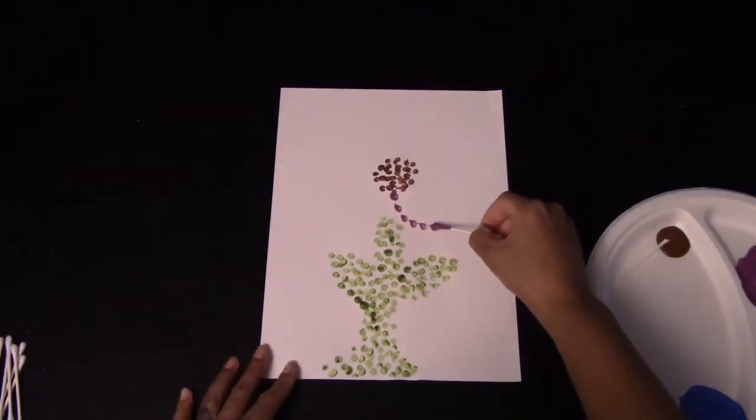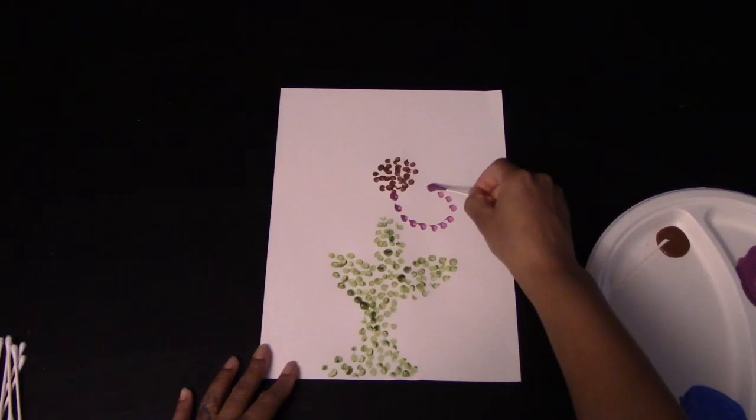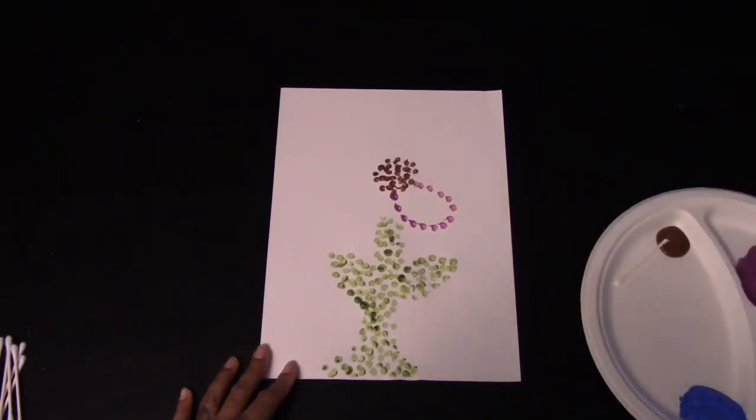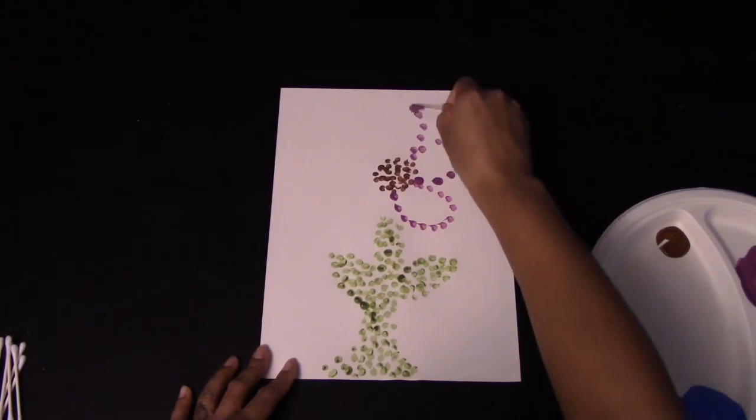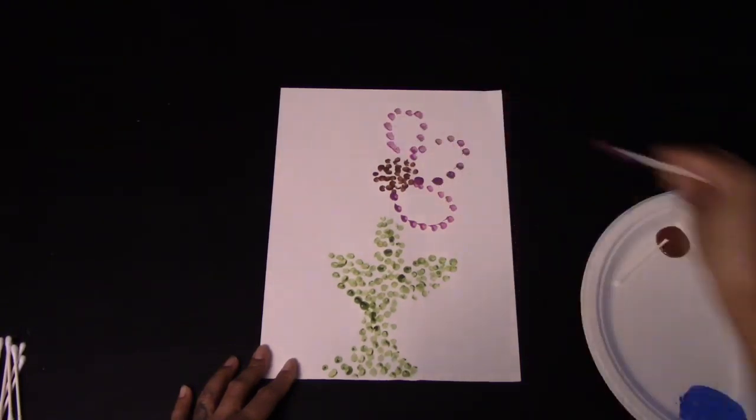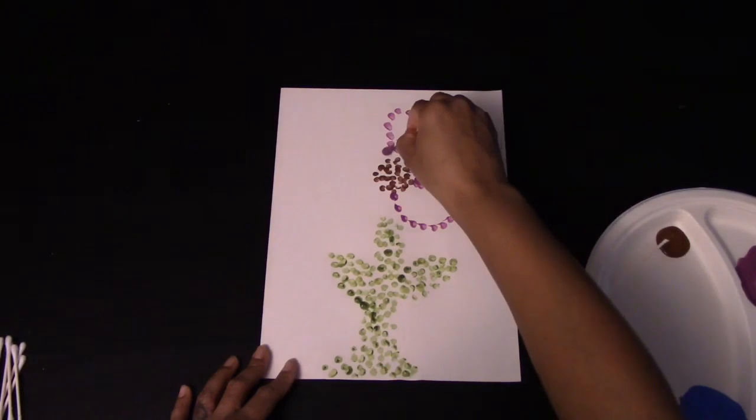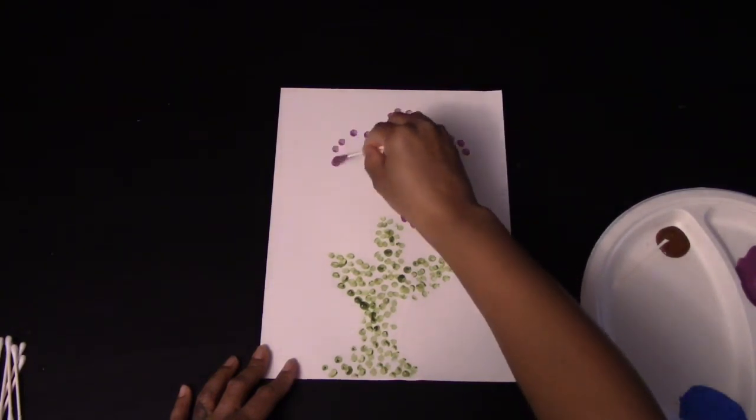The next thing you're going to do is take the color you would like your flower to be and you're going to draw the outline of the flower. You're going to start with the outline of the petals. Once you complete the outline of the petals, you can go ahead and fill them in completely with the color that you would like.